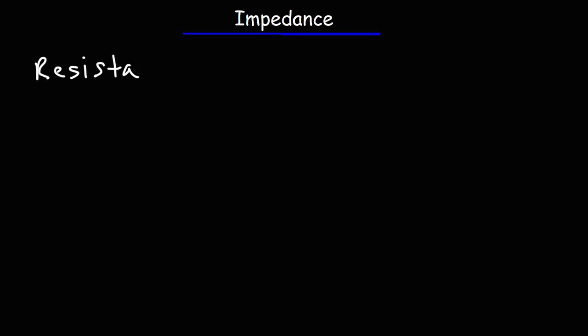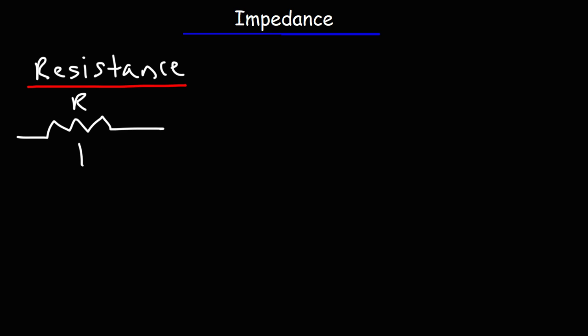What does a resistor do in a circuit? A resistor opposes the flow of electrical current. Here's a symbol of a resistor, and the unit for resistance is ohms. Whenever you increase the resistance of a circuit, the current flowing in that circuit decreases. Resistance provides opposition to the flow of DC current, or direct current. It can also oppose the flow of AC current as well.